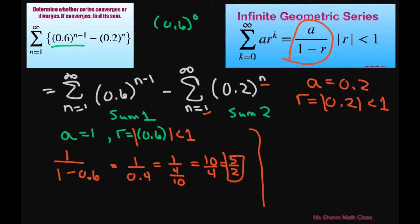So it's going to converge. We're going to write sum 2 equals 0.2 divided by 1 minus 0.2. This equals 0.2 divided by 0.8, which equals 2 eighths, which equals 1 fourth. This is sum 2. This one was sum 1.